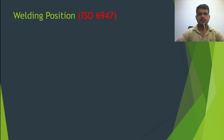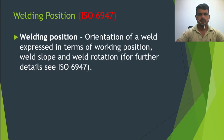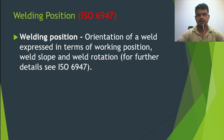So welding position — this is ISO 6947. I will try to take all the information from ISO 6947. You can also see the C-SWIFT 3.1 book, chapter 2. You can get all the information from there. Welding position is the orientation of a weld expressed in terms of working position. For further details, refer to ISO 6947.